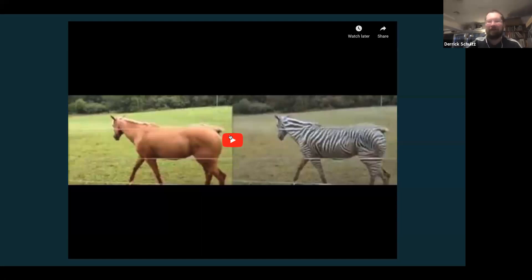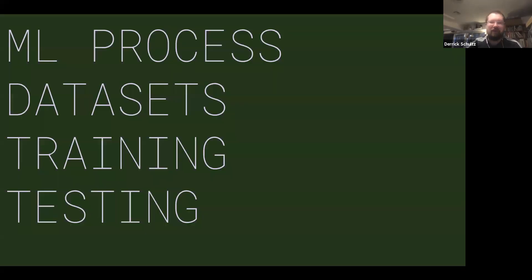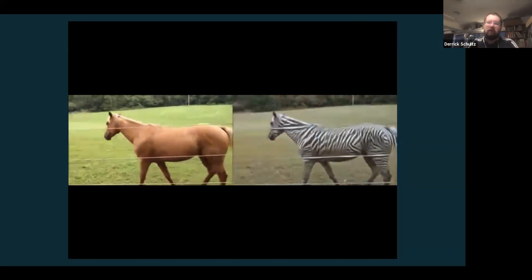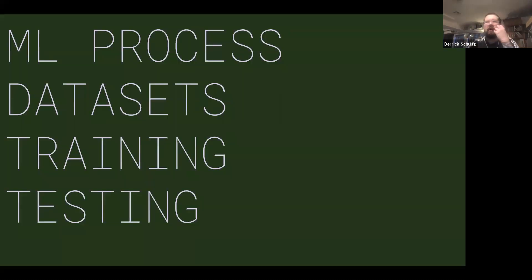The machine learning process is essentially three parts: building a dataset, then doing what we call training, and then doing what is referred to as testing or inference — in our case, testing is actually making the art. The end result of feeding a horse image and getting a zebra out is what we want to achieve. So let's break this down. Datasets: most of you have heard about how Facebook and Google own all this data about you.